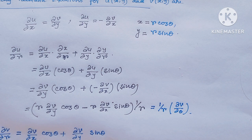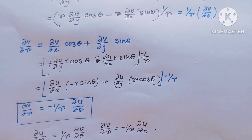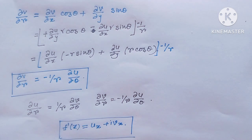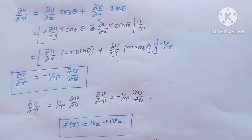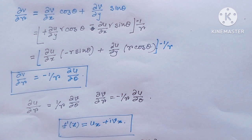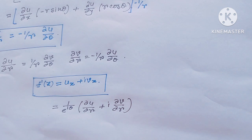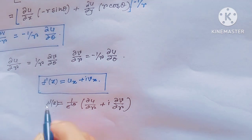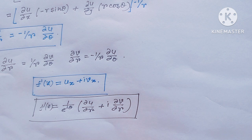The Cauchy-Riemann equations in polar form are: ∂u/∂r = (1/r) ∂v/∂θ and ∂v/∂r = -(1/r) ∂u/∂θ. Then f'(z) = u_x + i·v_x. Substituting the polar form, this gives f'(z) = (1 / e^(iθ)) · (∂u/∂r + i ∂v/∂r).